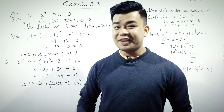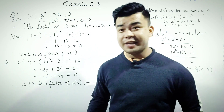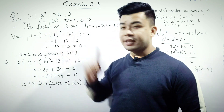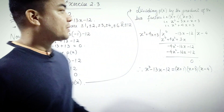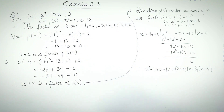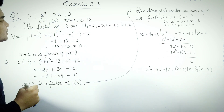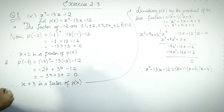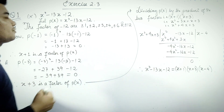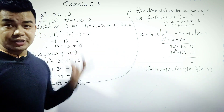Welcome to Exercise 2.3, question 1, Roman numeral 3. We need to factorize x cubed minus 13x minus 12 using the factor theorem.